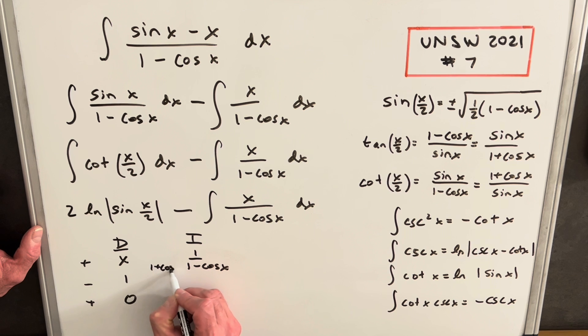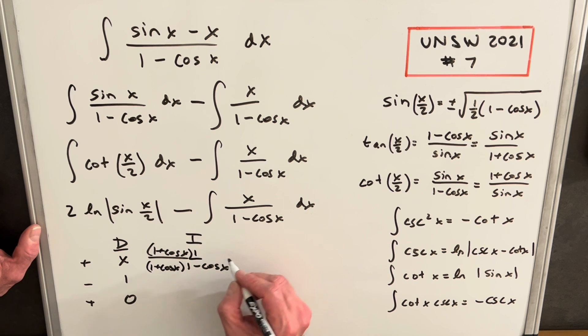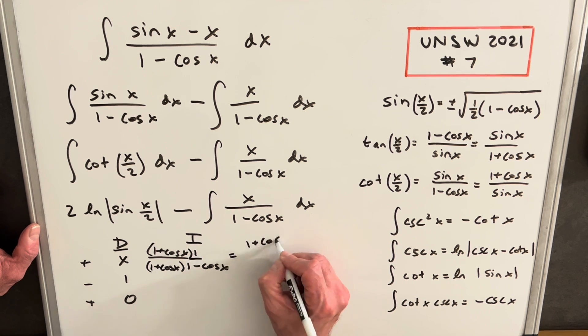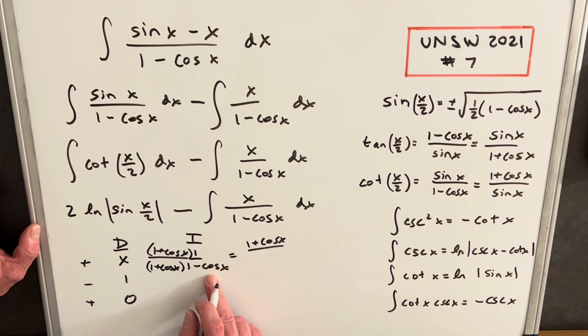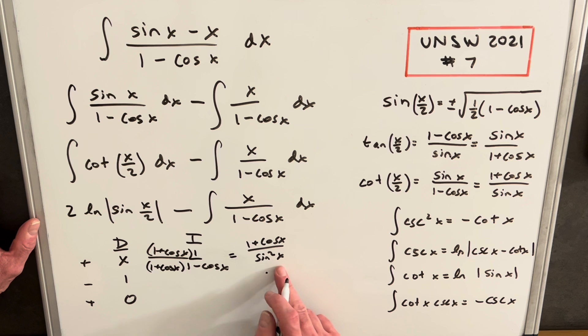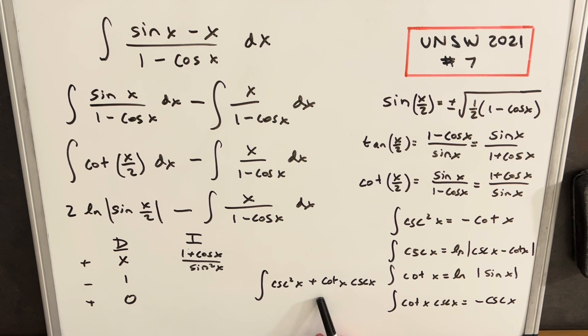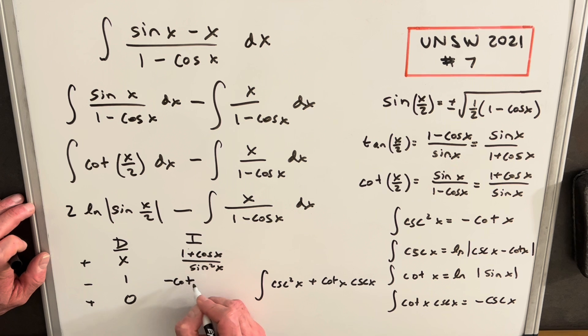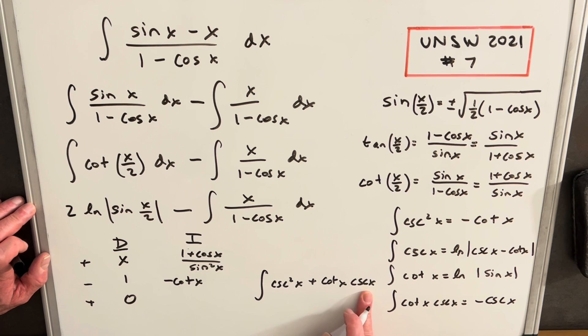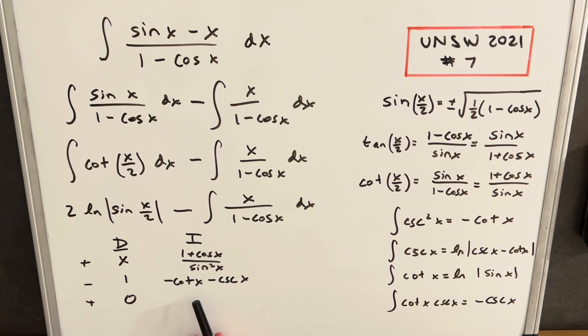Before I integrate this piece, I'm going to multiply 1 plus cos x in the numerator and denominator to transform this. That's going to give us 1 plus cos x over 1 minus cos squared x, which is just sine squared x. To integrate this, we'll break it up: 1 over sine squared x is cosecant squared x, plus cosine over sine squared x is cotangent x times cosecant x. For cosecant squared, we have minus cotangent x, and for cotangent times cosecant, it's minus cosecant x.